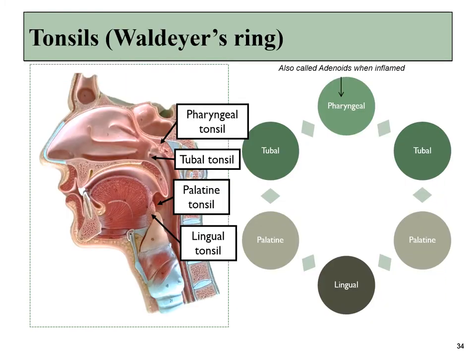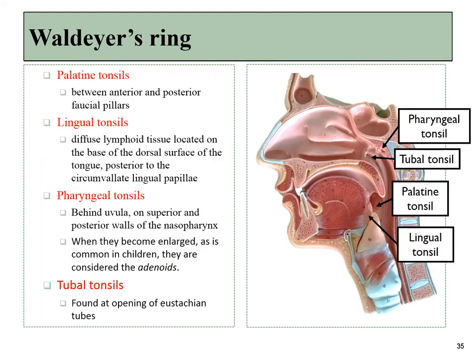If you were to look into somebody's mouth, there would be a ring of tonsils back in the pharynx. There's a lingual tonsil at the back of the tongue, a pair of palatine tonsils, a pair of tubal tonsils next to where the eustachian tubes open up, and lastly, a pharyngeal tonsil up in the nasopharynx. The exact location of these tonsils is not the focus of a histology class, but you might need to know this for your head and neck anatomy class.